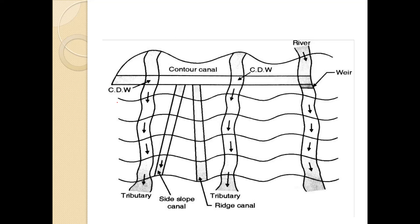As you can see, this is the cross drainage work and this is the contour canal. These are the contours and these are the tributary ridge canals. These are the cross drainage works. This is the contour canal. This is the weir through which water is flowing, and this is the river. This is the contour canal area to which water is flowing.